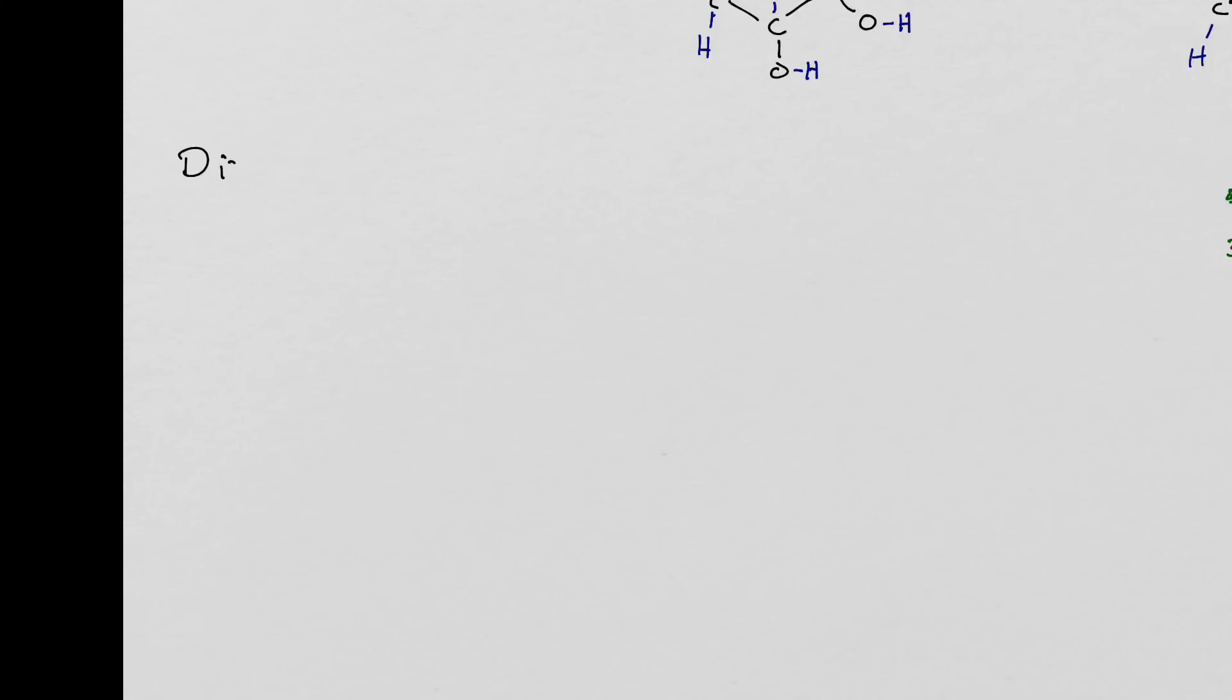When we combine two monosaccharides together, we get a disaccharide. There's some really common examples of disaccharide, like sucrose. Sucrose is what happens when you take a glucose molecule and combine it with a fructose molecule. Of course, this process uses an enzyme, releases a water as a result, which makes it a condensation reaction, which is a form of anabolism.